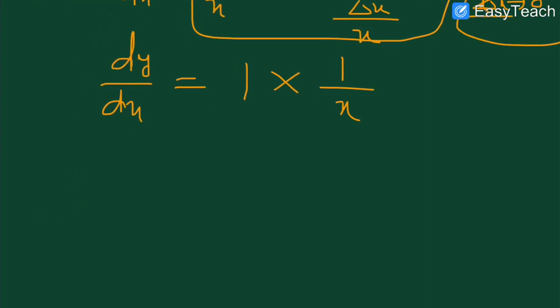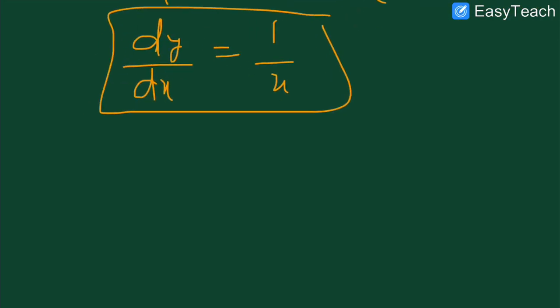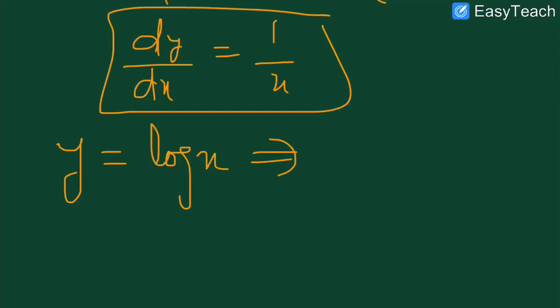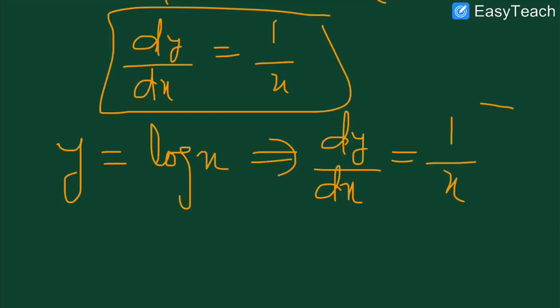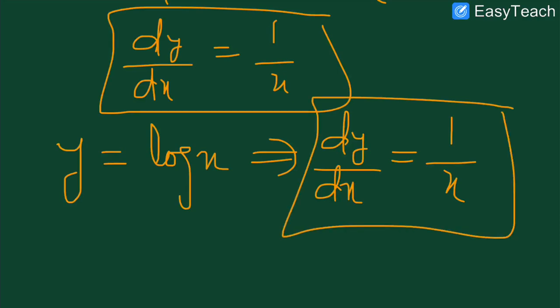On further simplification we get dy by dx is equal to 1 by x. So we can conclude, dear students: if we have a function y is equal to log of x, then its derivative or differential coefficient is equal to 1 by x. This is how we can differentiate log of x with the help of the ab initio method, or by first principle, or from definition. In the next lectures we will discuss derivatives of some more functions. Till then, goodbye.